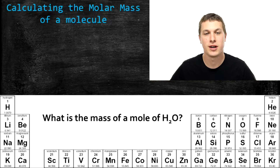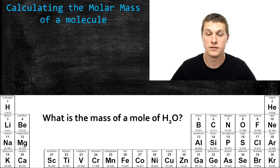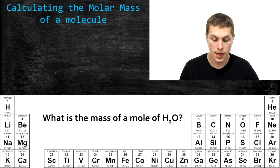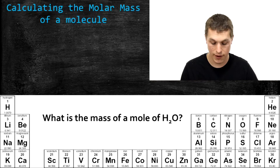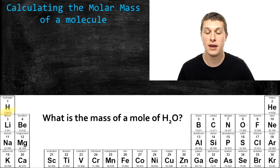In this episode of Real Chemistry, we're going to talk about calculating the molar mass of a molecule. Recall that the molar mass of something is just how much a mole of something weighs. So if I have a mole of hydrogen atoms, for example, then I know that weighs about one gram, and I know that from the periodic table. Finding the molar mass for an atom is pretty easy — you just look at the chemical symbol on the periodic table and find the number below it, and that's your molar mass.